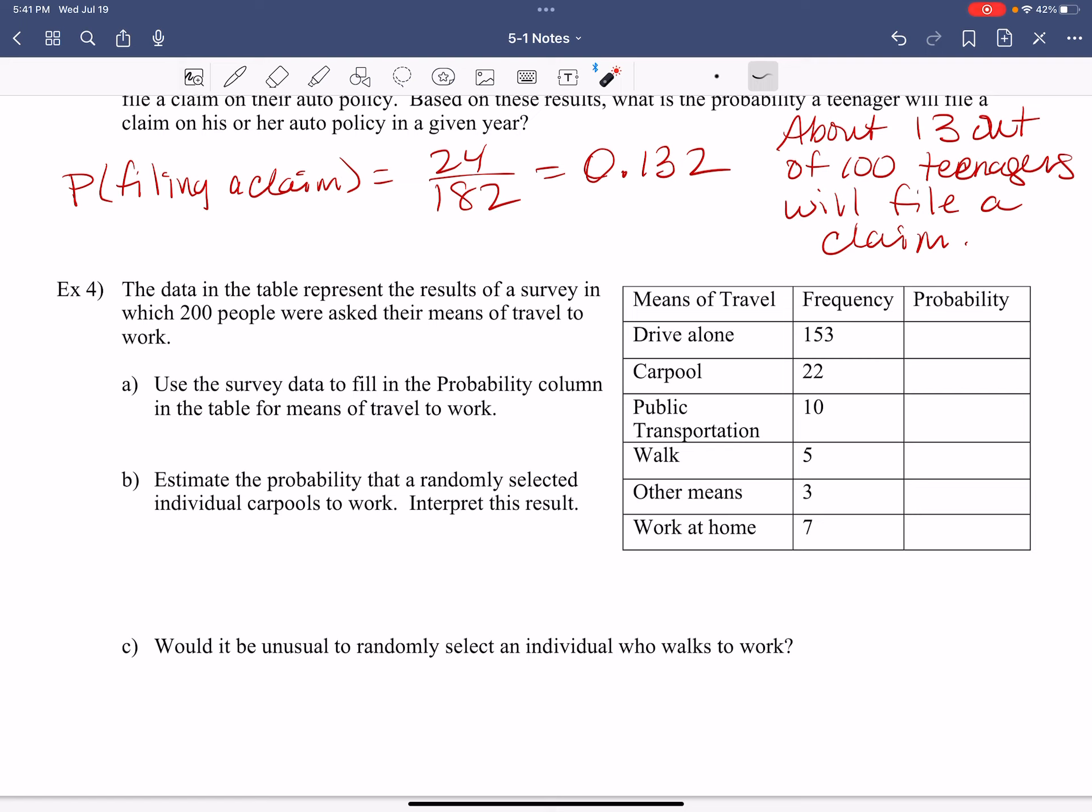The data in the table represent the results in a survey which 200 people were asked their means of travel to work. So this is how people are traveling to work. Use the survey data to fill in the probability column in the table for means of travel to work. So how do I figure out how many people drive alone? What are you going to do there?